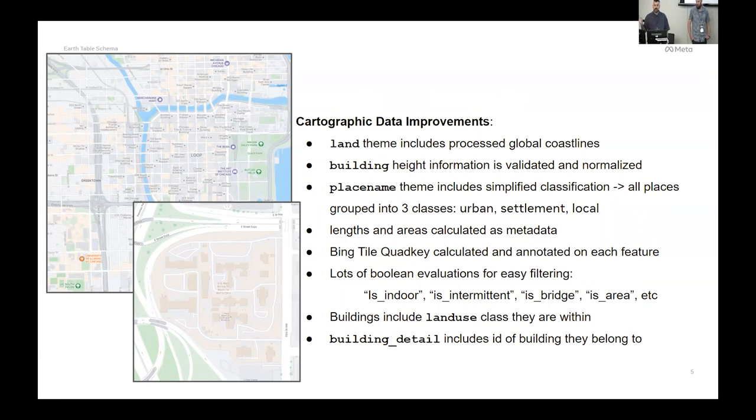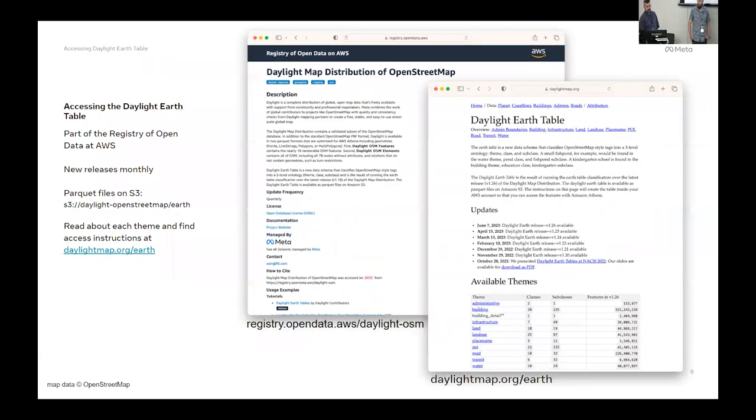The Bing quad key to every feature, which is important for doing a bunch of quick searching. Added a lot of Boolean evaluations, like this is indoor, this is intermittent, this is bridge, just true-false for a lot of those, instead of having to know several tag combinations.